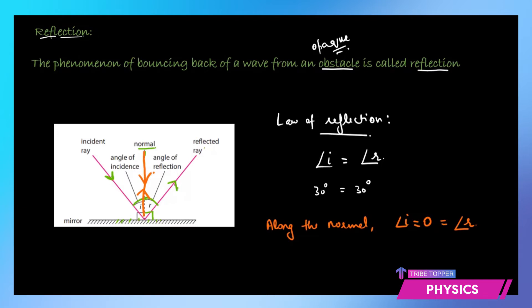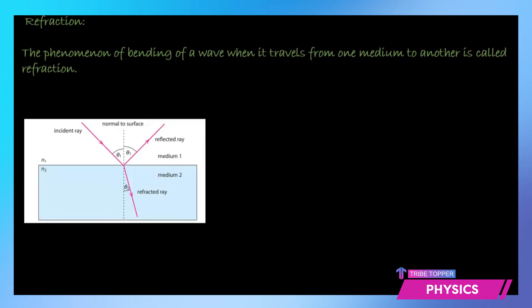The next thing we talk about is refraction. When a wave travels from one medium to another medium where both mediums have different densities — like air is one medium and a ray travels into water or glass, which is another transparent medium.